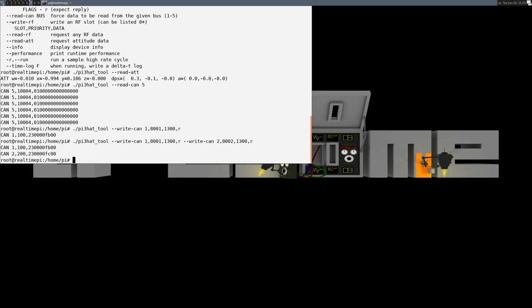We'll see if we get a response back from on bus 1 from servo ID 1, and there's the status response. We can do multiple at the same time. If we do write can 2, we get the first two servos. So I'll queue up all four.